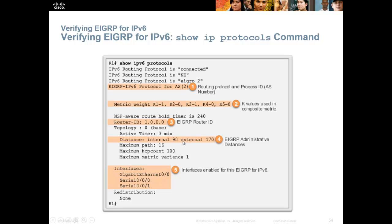Remember, in CCNA we're only focused on the 90 — the administrative distance of internal EIGRP. We're only talking about setting up EIGRP at one site. But when you get to CCNP, we'll talk about EIGRP that connects to OSPF that connects to EIGRP somewhere else. You will actually be importing external EIGRP networks or different autonomous system numbers into your network, so that's when the administrative distance goes up to 170.